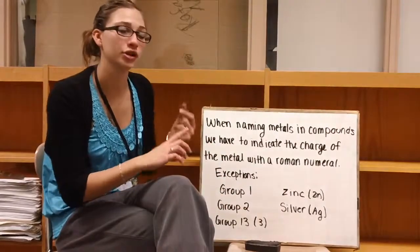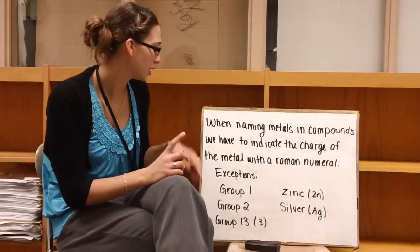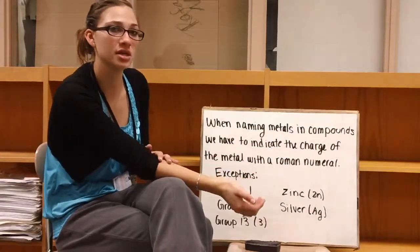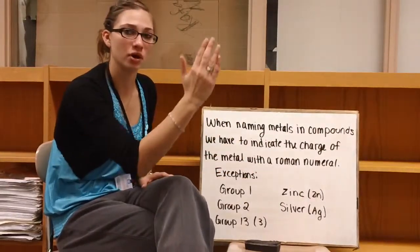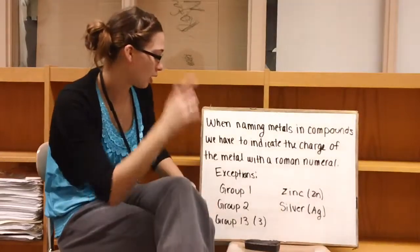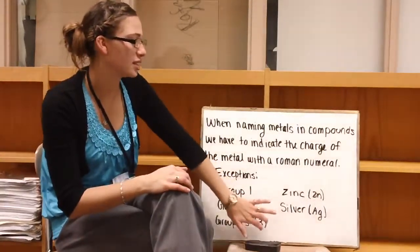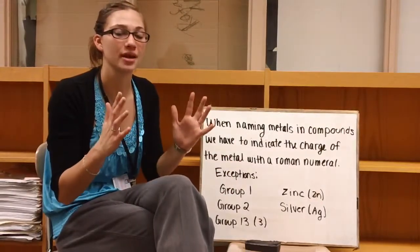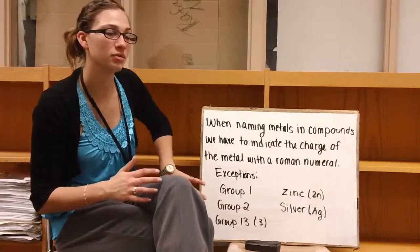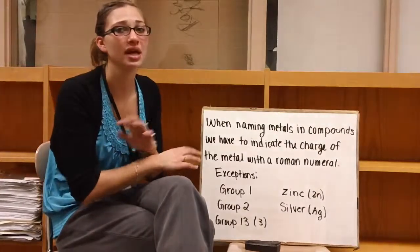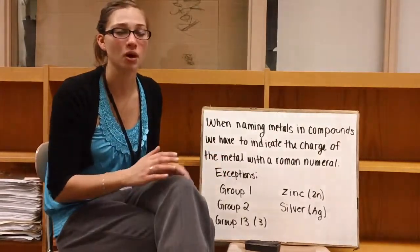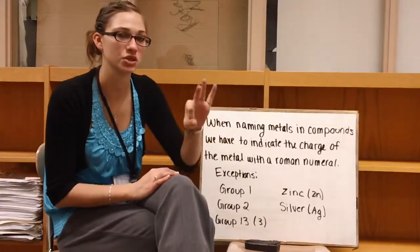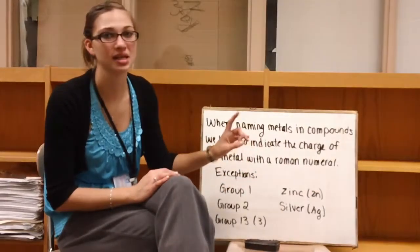We don't have to do this for group 1, group 2, and then group 13, which we can call group 3. So it's going to be starting with boron all the way down, and then zinc and silver. That's something you're going to have to memorize. So it's basically your transition metals plus a few more. But a good way to remember it is you're going to include a Roman numeral for the charge for all metals except for group 1, group 2, group 3, which is starting with boron all the way down, zinc, and silver.